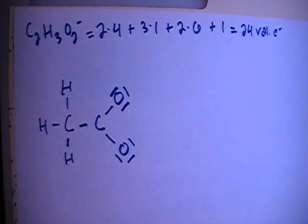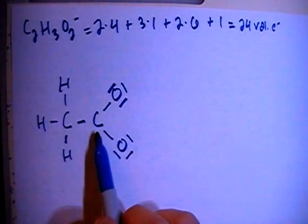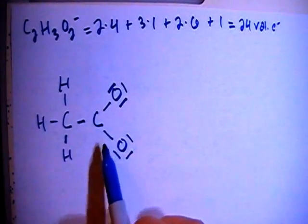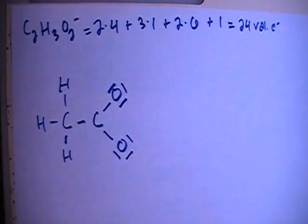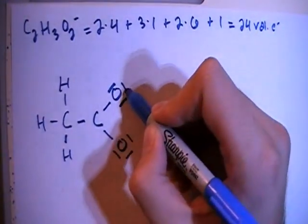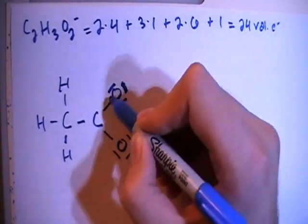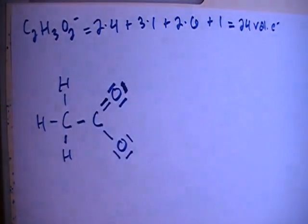So this looks to be pretty accurate, except if you notice, this carbon only has three bonds, which means six electrons, and they're supposed to have eight for their octet. So what we're going to do is we're going to move this non-bonding pair of electrons here and form a double bond with the carbon right there.